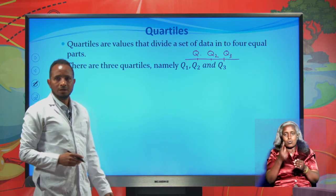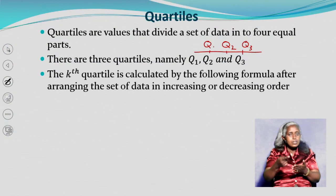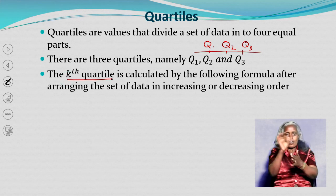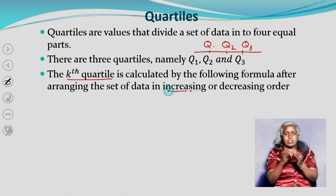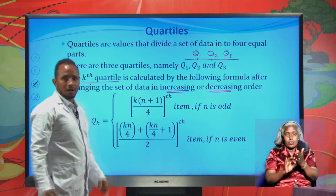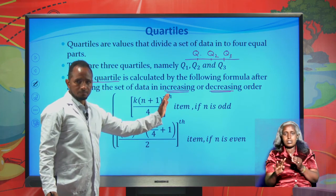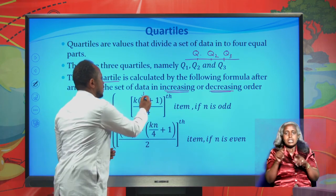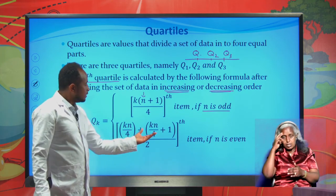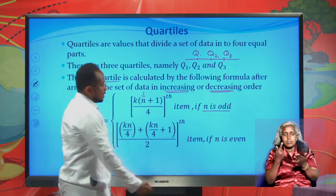There are three quartiles, namely quartile one, quartile two, and quartile three. The k-th quartile is calculated by the following formula after arranging the data in increasing or decreasing order. It is k times (n plus one) over four's item when n is odd, and the average of the (kn/4)-th and (kn/4 + 1)-th items when n is even.